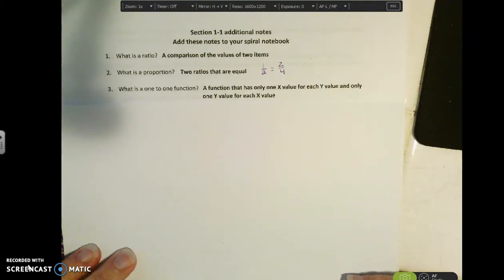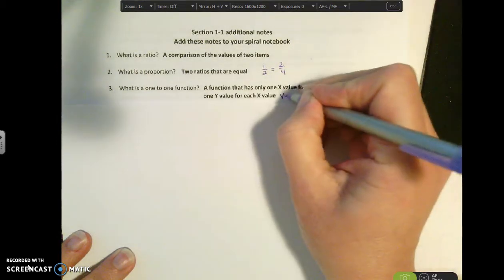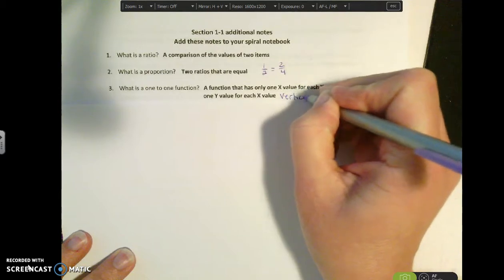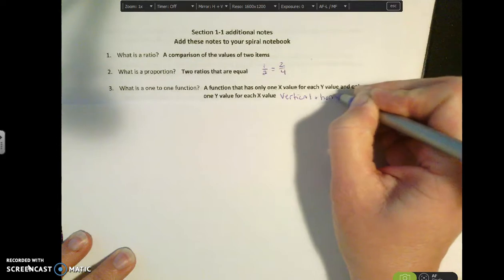So this section also talks about functions, but this specifically is talking about a one-to-one function. A one-to-one function is a function that has only one x value for every y value and only one y value for every x value. So you may have heard of a vertical line test. This one has a vertical line test. It will pass the vertical and the horizontal line test.